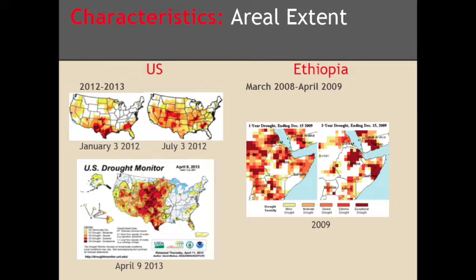The Ethiopian drought lasted from March 2008 to April 2009, consequently having large impacts on the nation, such as famine.